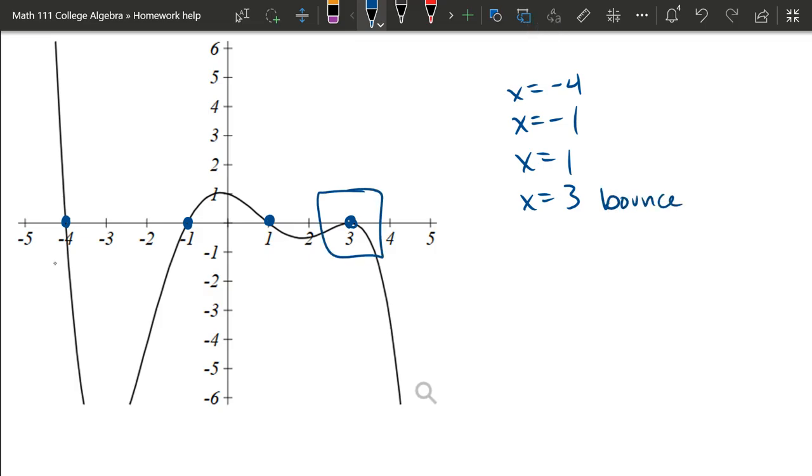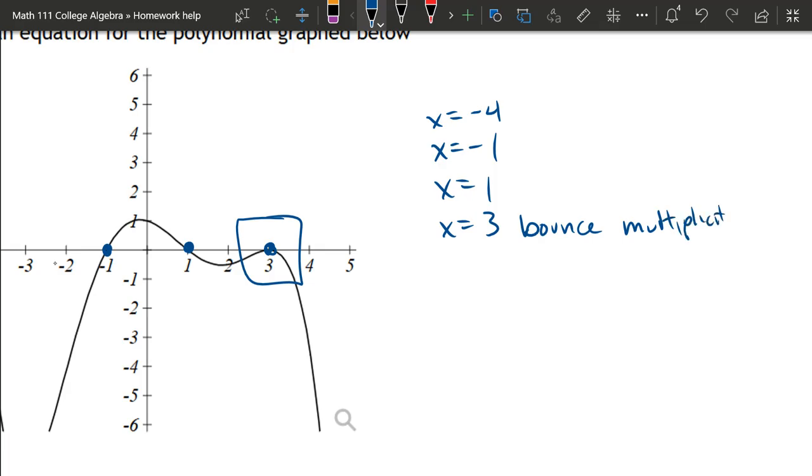That's a bounce, which means the multiplicity is even. All the other three are cross, so that's odd multiplicity. We're going to choose the smallest odd number or smallest even number. The smallest odd is 1, so these have multiplicity 1. Even multiplicity is going to be multiplicity 2.